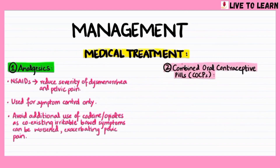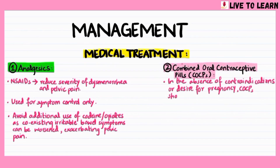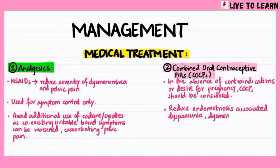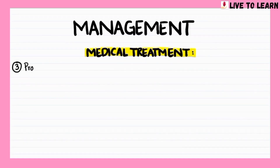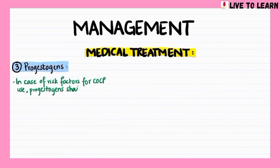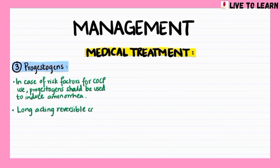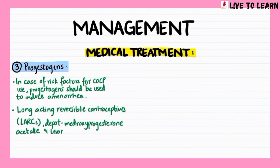Combined oral contraceptive pills should be considered in the absence of contraindications or the desire for pregnancy. COCPs reduce endometriosis-associated dyspareunia, dysmenorrhea, and provide cycle control and contraception. In case of risk factors for COCP use, progestogens should be used to induce amenorrhea. Long-acting reversible contraceptives, depo-medroxyprogesterone acetate, and the levonorgestrel intrauterine system are useful.